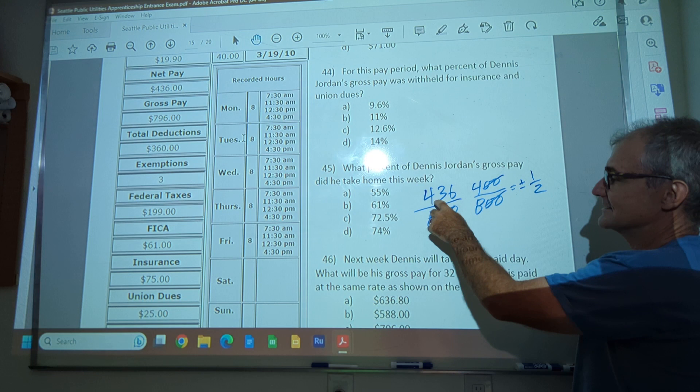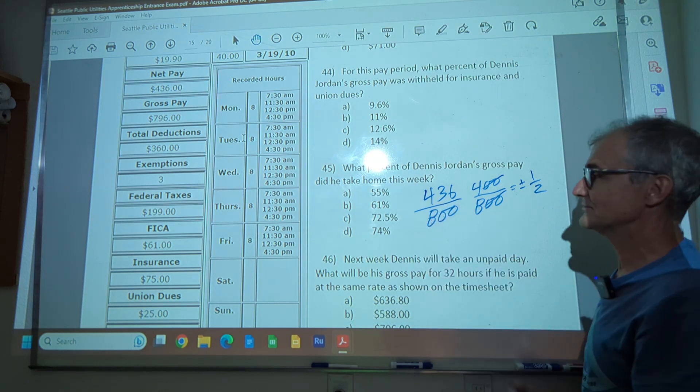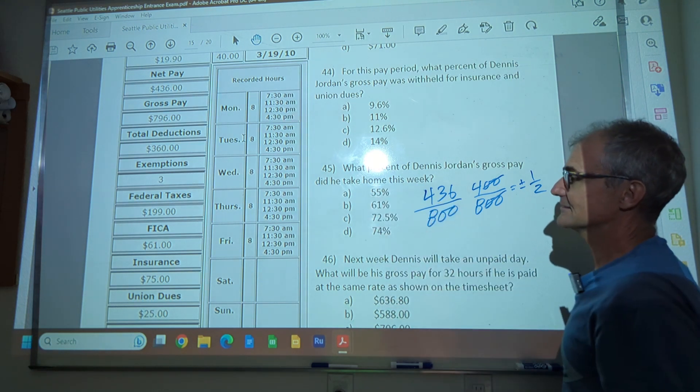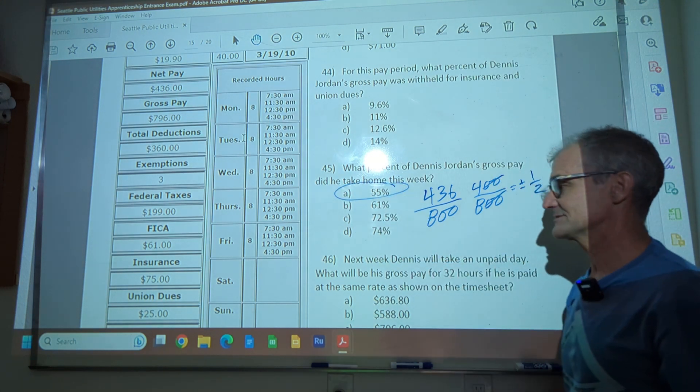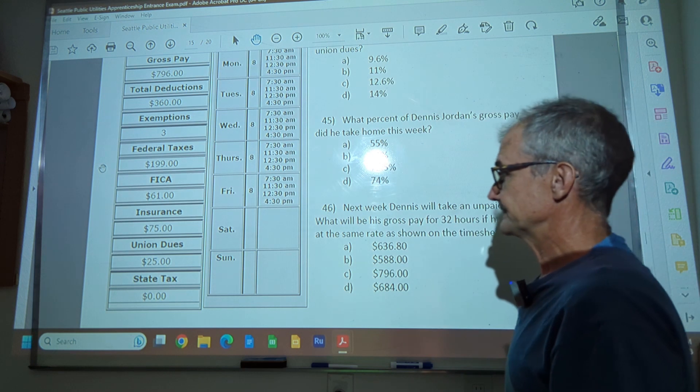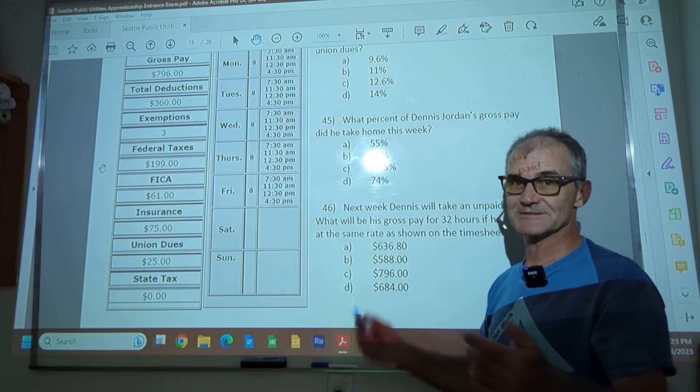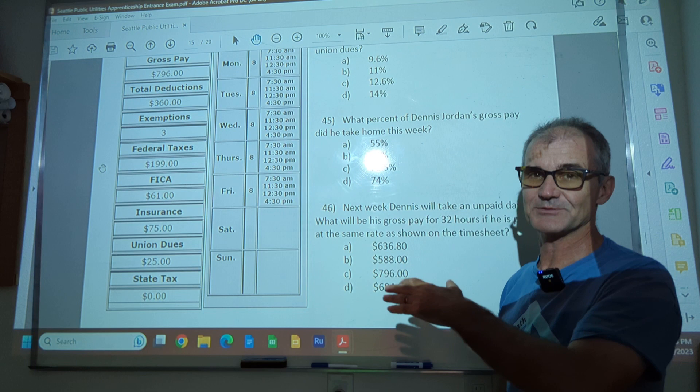But I rounded this down quite a bit. So it's got to be a little bit more than 50 percent. Only one answer right there. That's close to 50 percent. Answer A, 55 percent right there. Okay. 46 right here. Actually, before I do 46, I'll call this the last problem. If you need a channel, think about subscribing, sharing this with anybody you know who might be taking a standardized math exam.